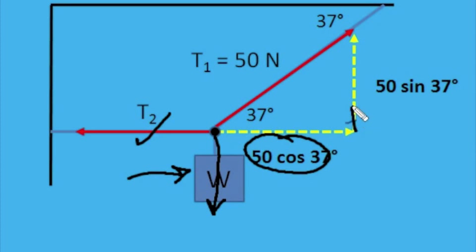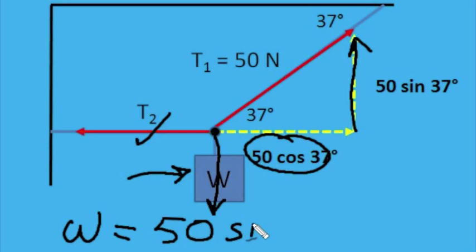There's the weight acting down, and it must equal whatever's acting up. And the only force acting up is 50 sine 37. Therefore, I can say W equals 50 sine 37 degrees.